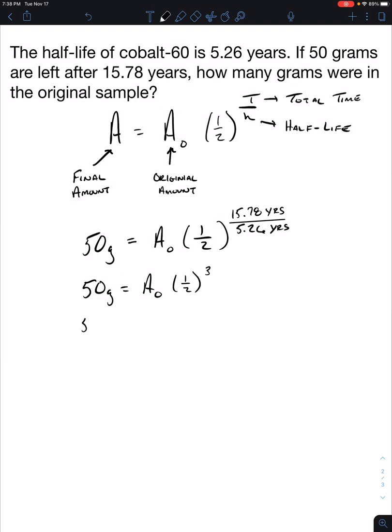So our next step is, we're going to go ahead and raise one half to the third power. Remember PEMDAS. So exponents come first, and then we'll multiply or divide. So we're going to raise that to the third power, which is one half times one half times one half. If you do that, you're going to get that a sub 0 is going to be multiplied by 1 over 8, or an eighth.